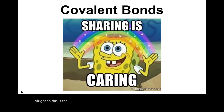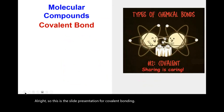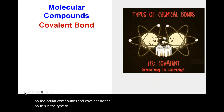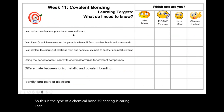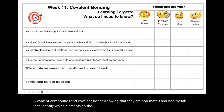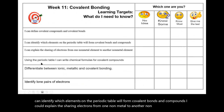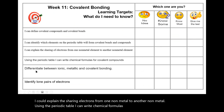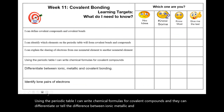This is the slide presentation for covalent bonding — molecular compounds and covalent bonds. I can define covalent compounds and covalent bonds, knowing that they involve nonmetals and nonmetals. I can identify which elements on the periodic table will form covalent bonds, explain the sharing of electrons from one nonmetal to another, write chemical formulas for covalent compounds, differentiate between ionic, metallic, and covalent bonds, and identify lone pairs.